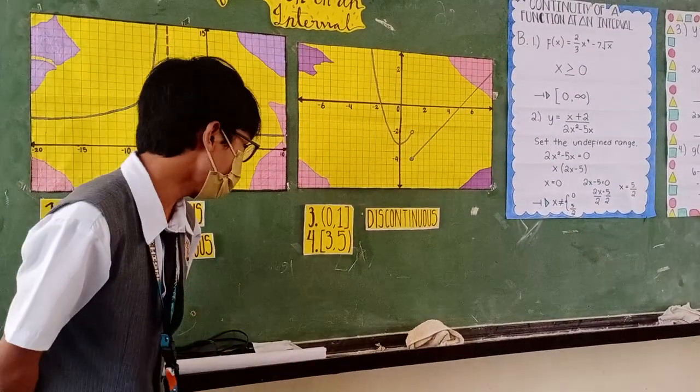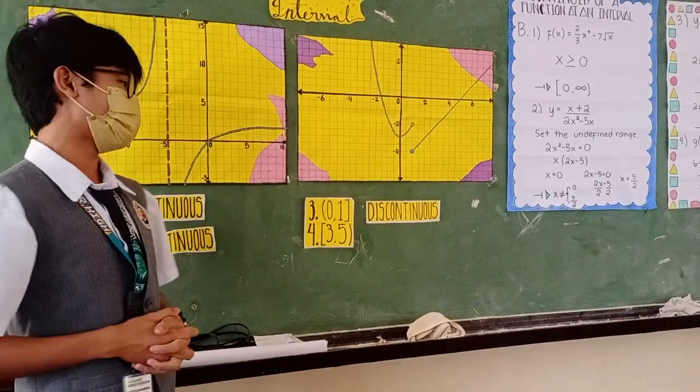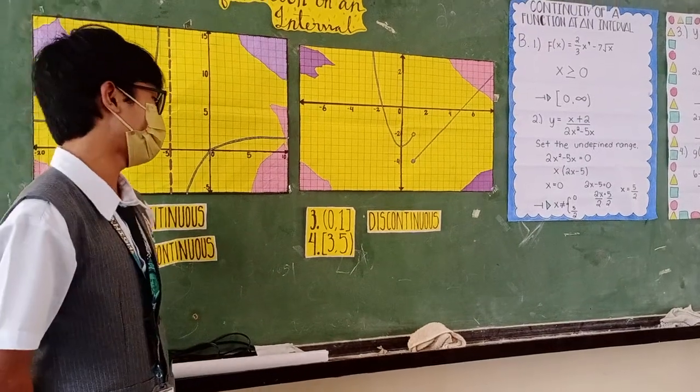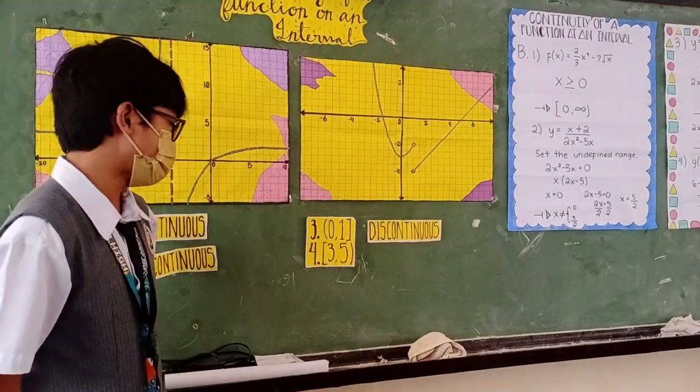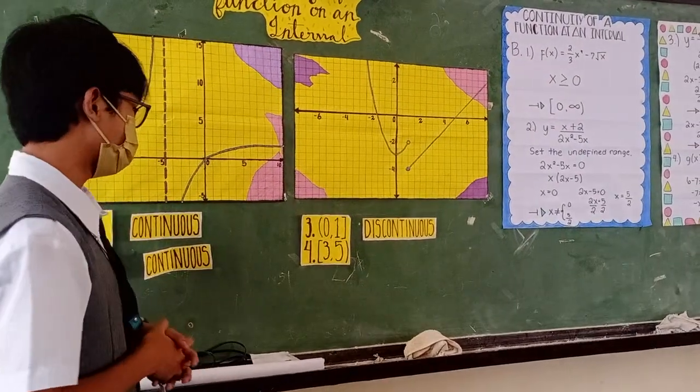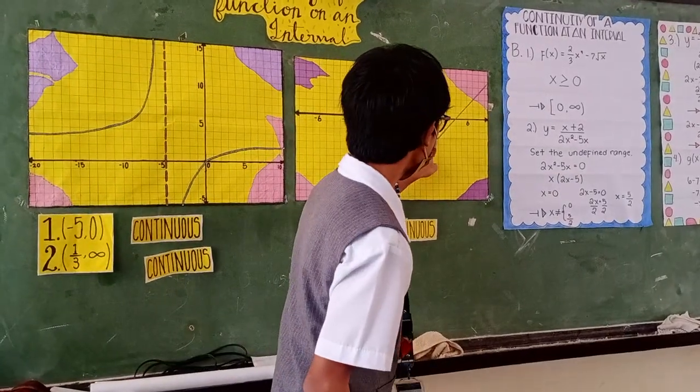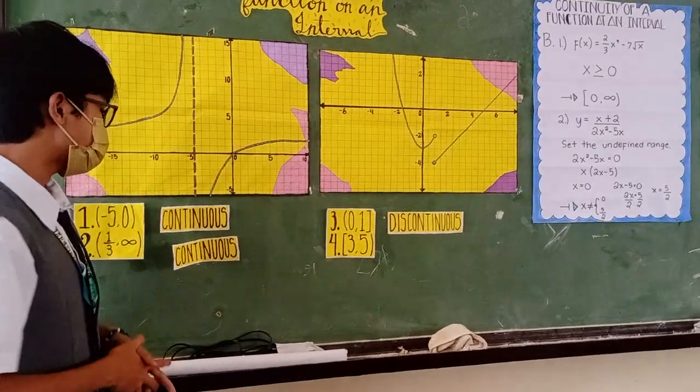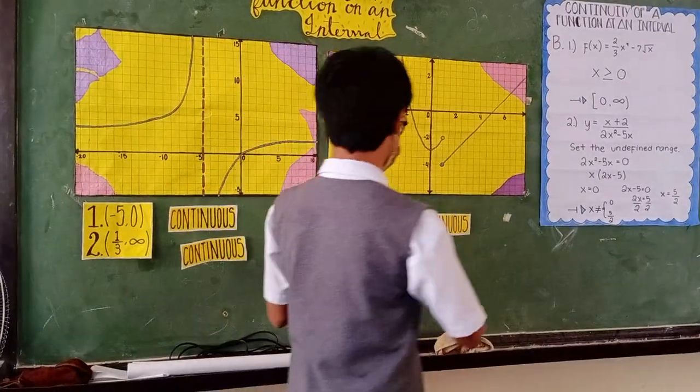For item number four, the given interval is three and five. It is also an example of a combination interval where three should be included and five should not be included. From this point to this point, since the line is not broken while tracing the line, this graph is continuous.